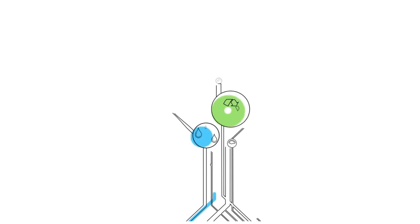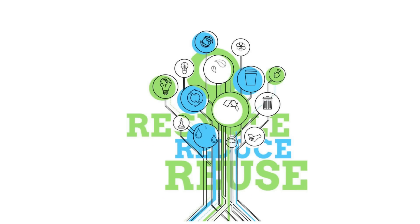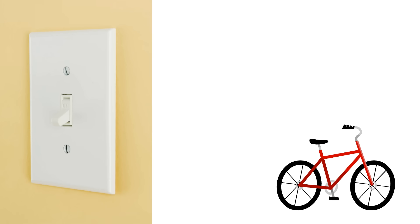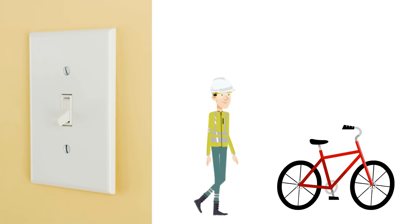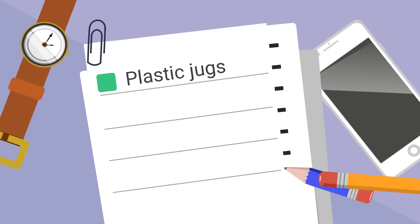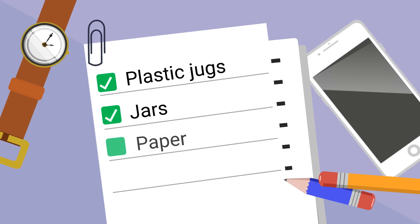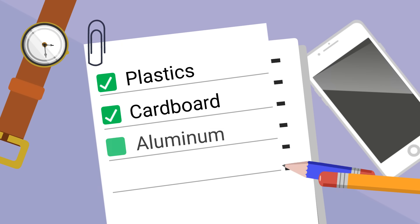Because many important resources are limited, we can all reduce, reuse, and recycle. You can turn off lights when you are not in a room. You can ride your bike more and walk more to reduce the amount of gasoline used. You can reuse and recycle things like plastic jugs, jars, paper, paper bags, plastics, cardboard, aluminum, and even steel.